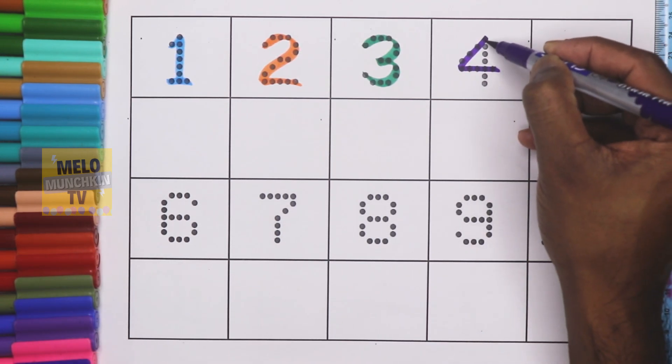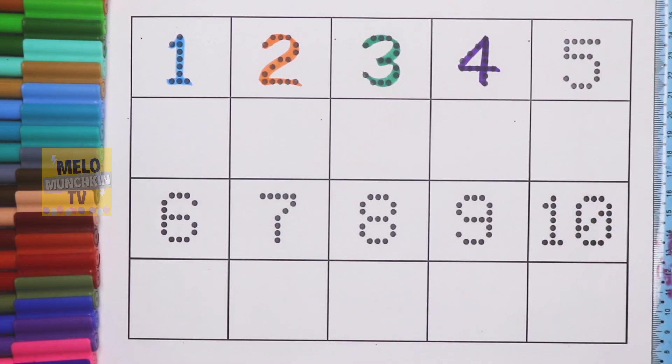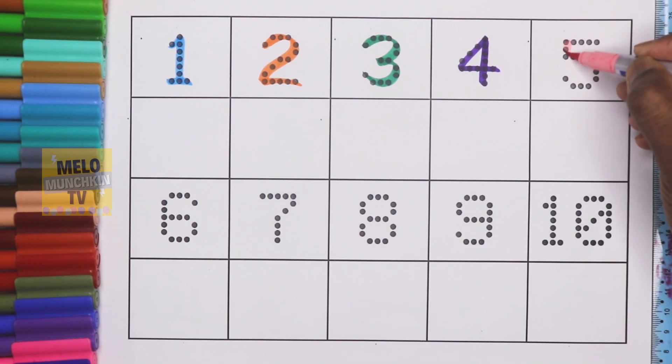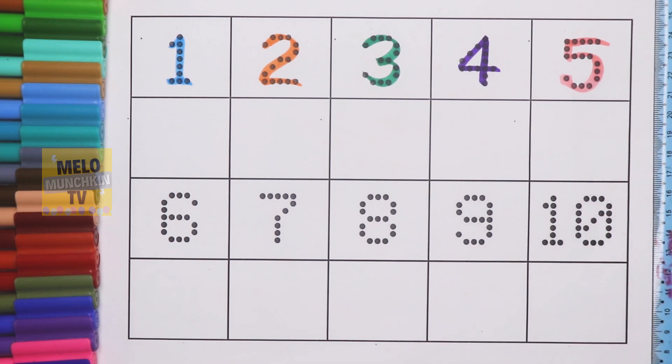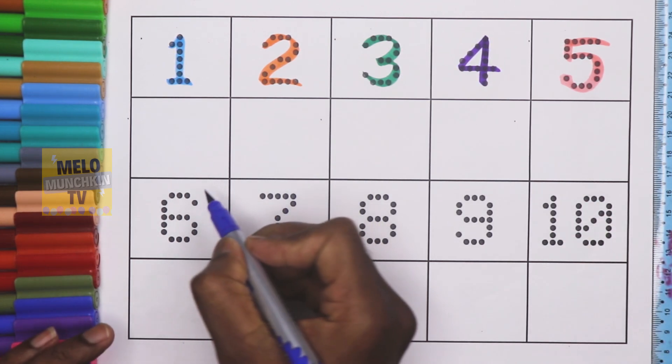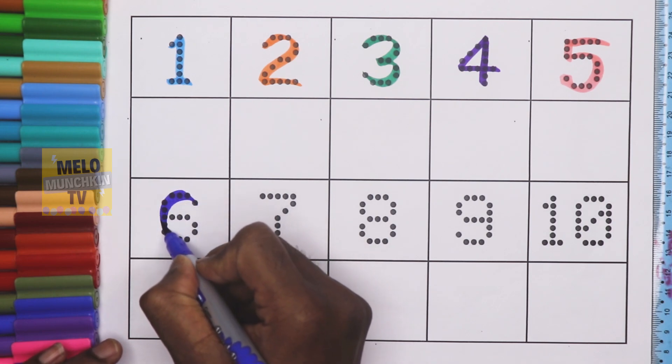Next I'll take light pink color to write number 5, F-I-V-E, 5. This is number 5. Then I'll take dark blue color to write number 6. This is number 6, S-I-X, 6.